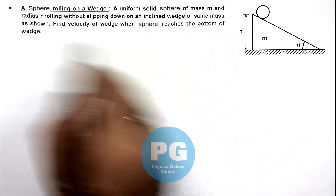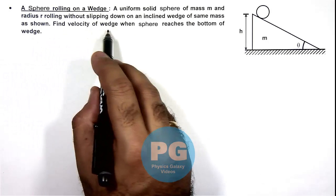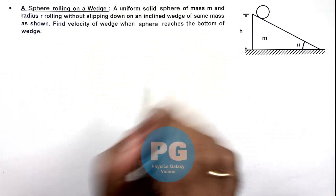of same mass as shown. Here we are required to find the velocity of wedge when sphere reaches the bottom of this wedge.